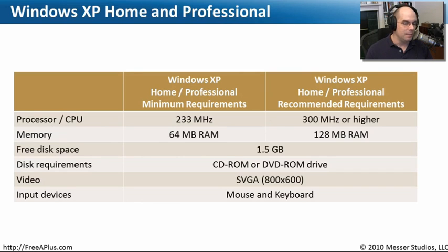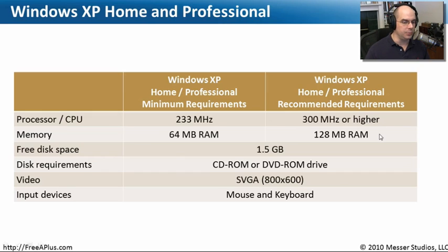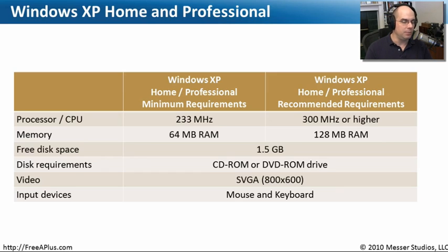Windows XP requirements are much different from Windows Vista. The minimum requirements are just a 233 megahertz processor with 64 megabytes of RAM, and even 800 by 600 video — a very basic, low-end system. For recommended requirements, it's at least a 300 megahertz processor running 128 megabytes of RAM. You can see why Windows XP is still used — it supports so many kinds of computers, and even a very old computer can easily run Windows XP with what today would be considered very fundamental hardware requirements.